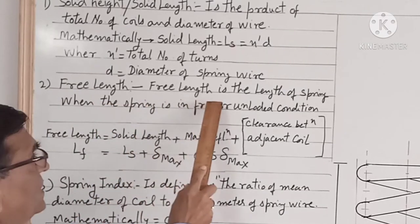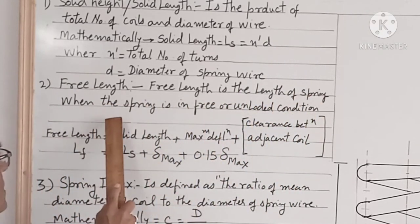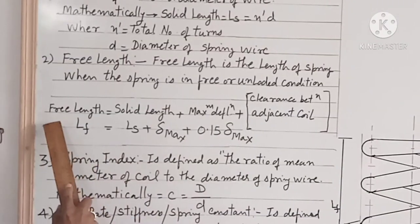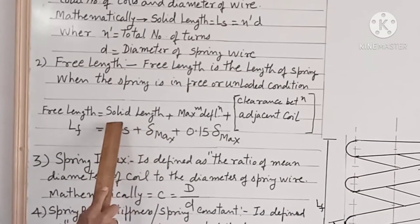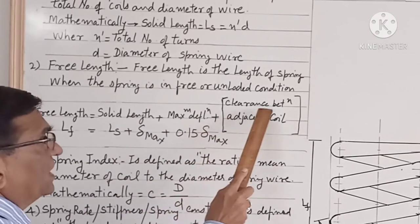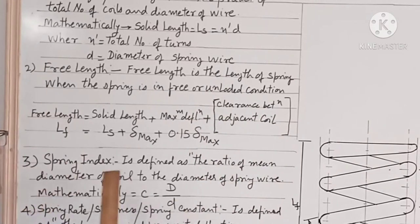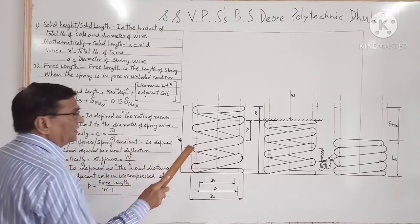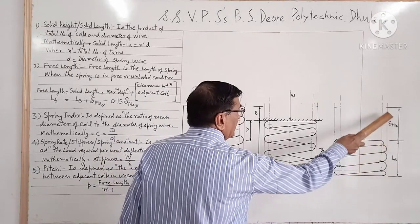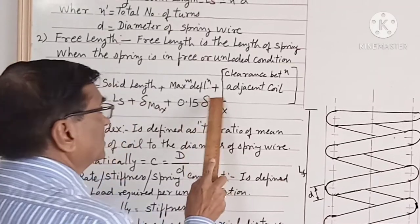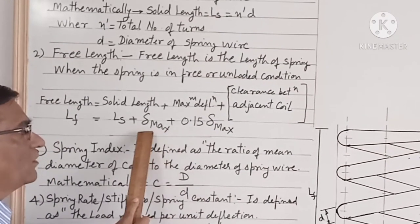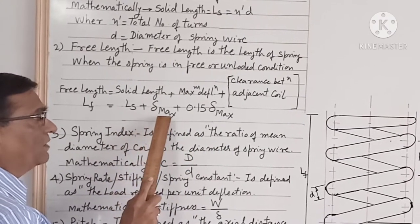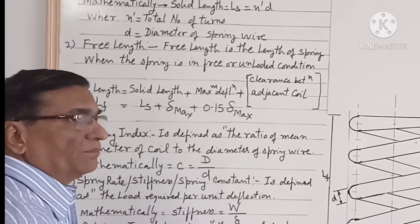Free length is the length of the spring when the spring is in free or unloaded condition. Mathematically, free length Lf is equal to solid length Ls plus maximum deflection δ_max plus clearance between adjacent coils. We generally take the clearance as 15% of the maximum deflection, so Lf = Ls + δ_max + 0.15 × δ_max.